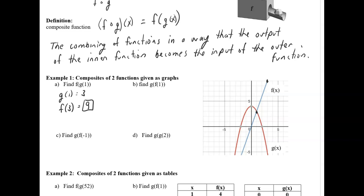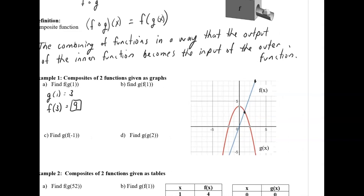Now let's look at g of f of 1 — it looks almost the same but the order is different. The inner function is now f, so we find the output when input to f is 1, which is also 3. But this time we're looking for g of 3. Looking at the g function at x equals 3, we go all the way down and get negative 5. So g of f of 1 equals negative 5.